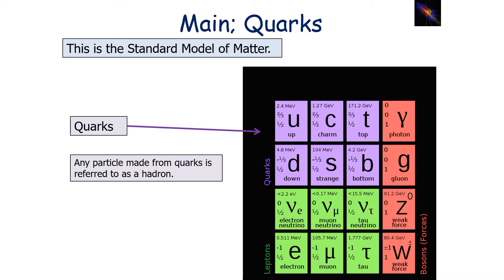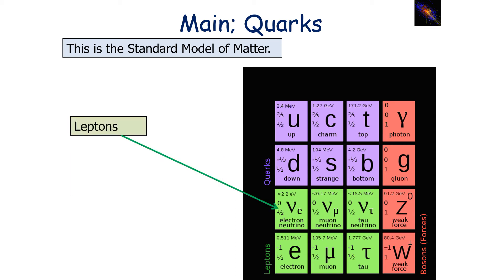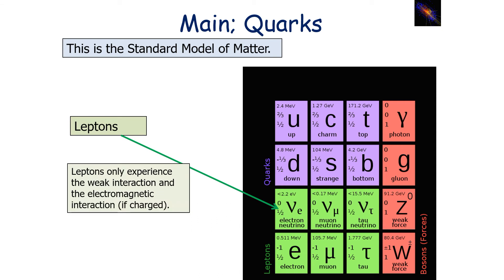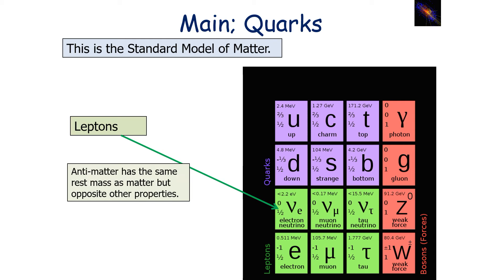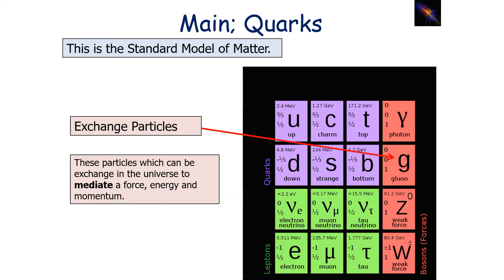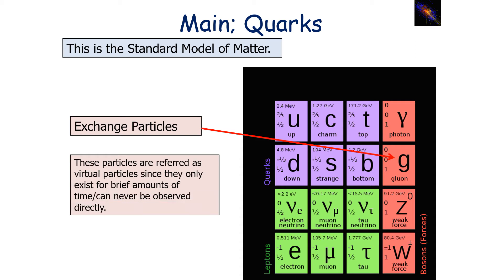Any particle made from quarks is referred to as a hadron, but quarks do not exist in isolation. Only baryons have a non-zero baryon number, and there are also anti-quarks found in the antimatter standard model. Antimatter has the same rest mass as matter, but opposite other properties. Leptons — electrons, muons, taus, and neutrinos — do not experience the strong interaction; they only experience the weak interaction and the electromagnetic interaction if they are charged. Only leptons can have a non-zero lepton number. Exchange particles mediate a force, energy, and momentum, and are referred to as virtual particles since they only exist for brief amounts of time and can never be observed directly.